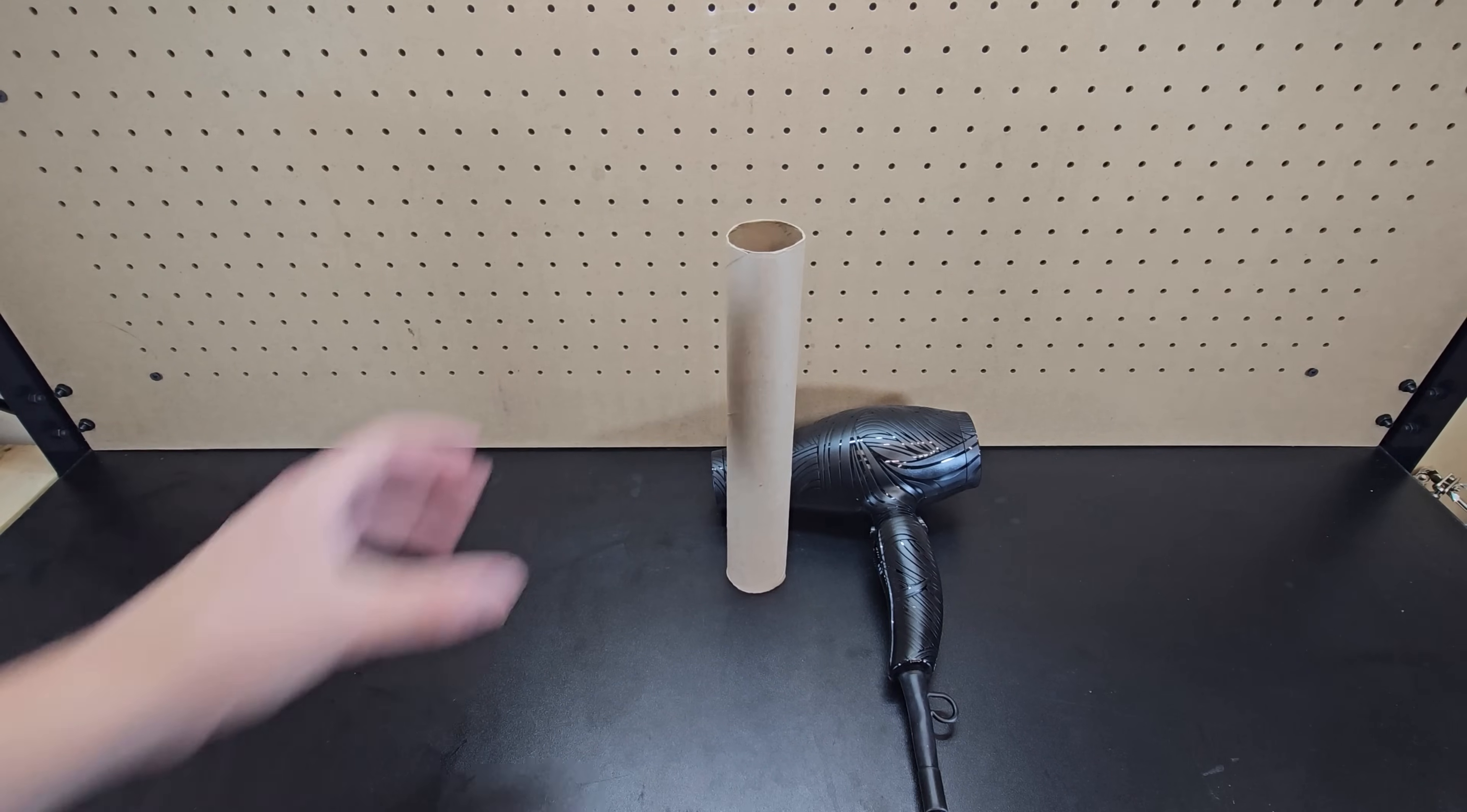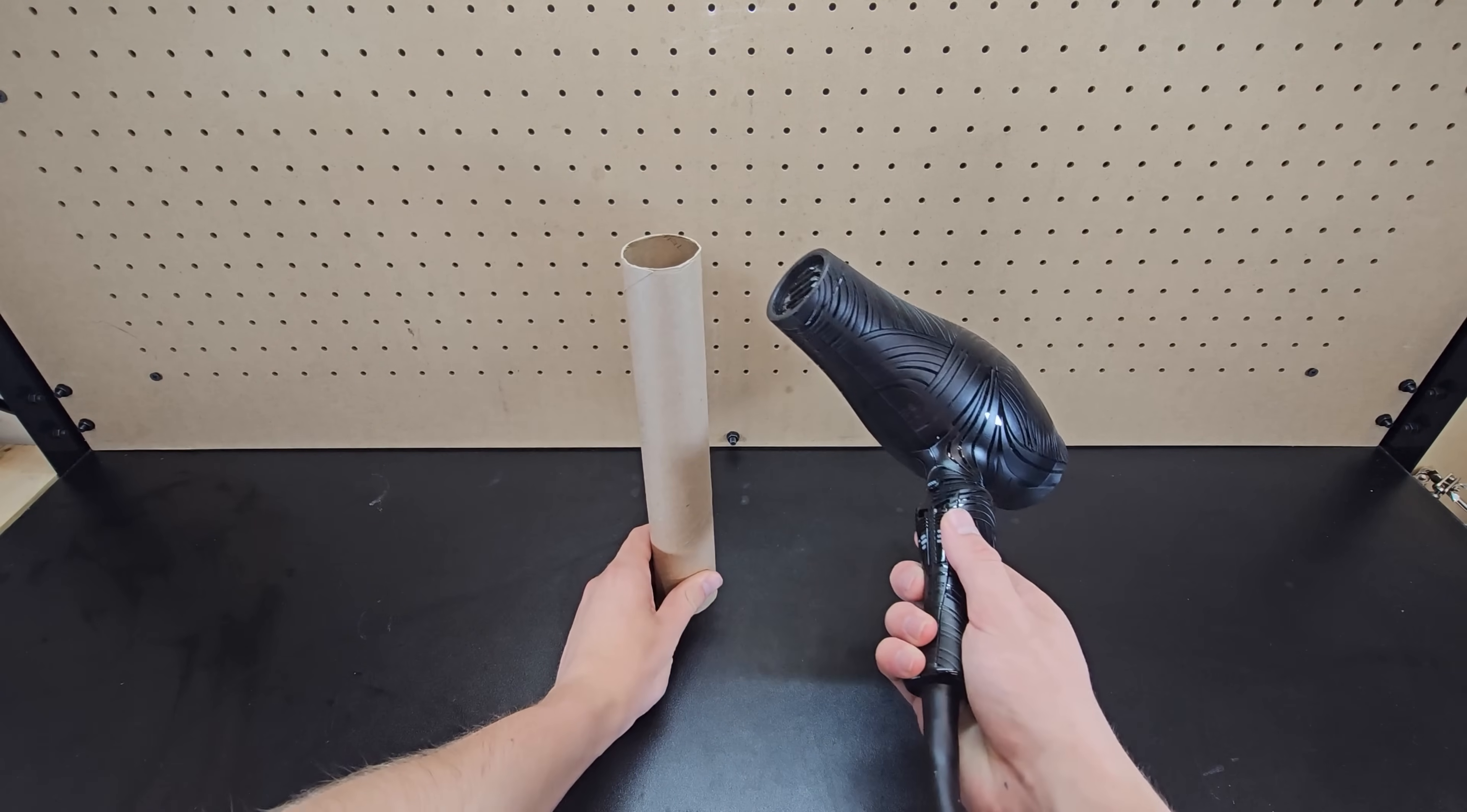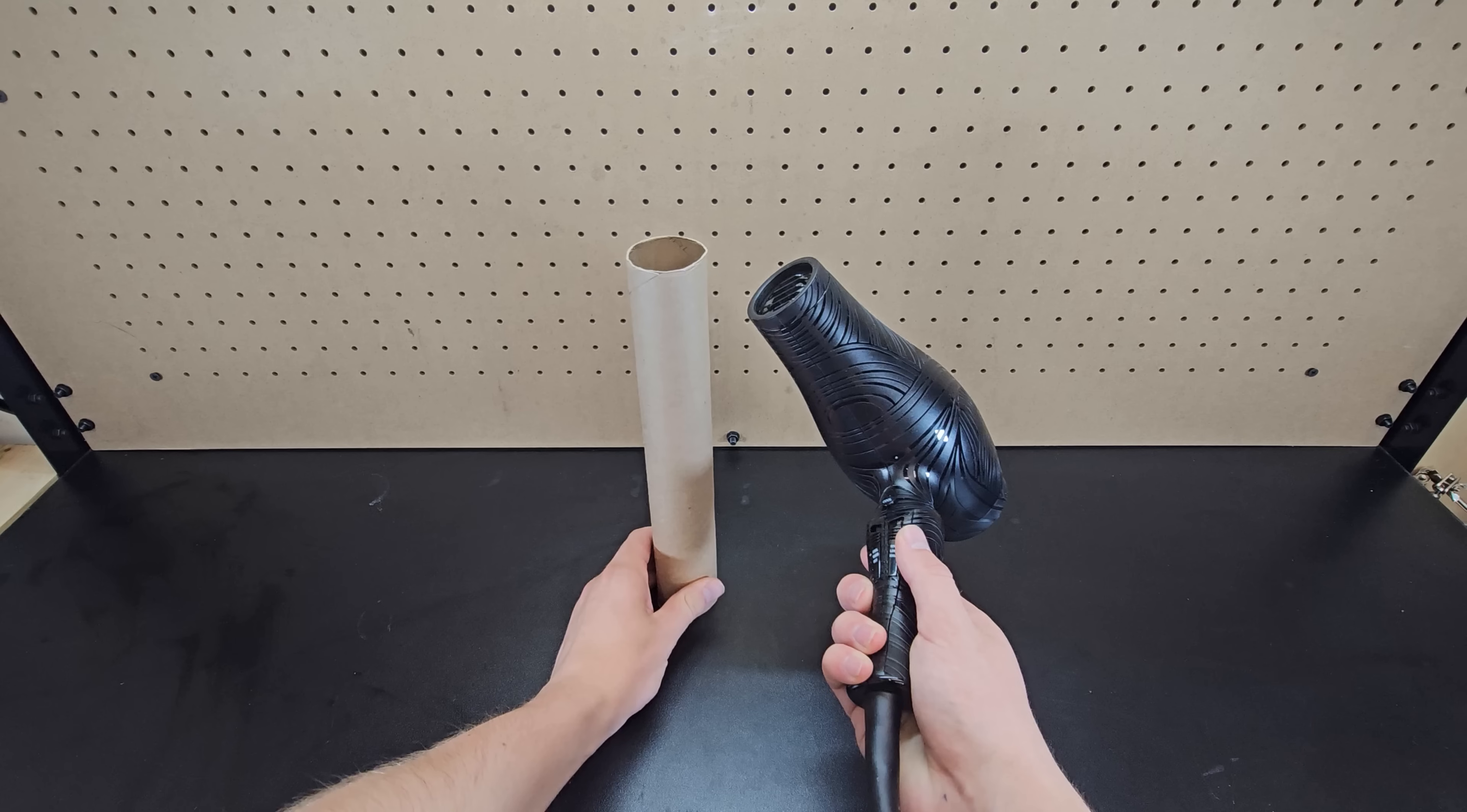If you place a ping pong ball inside a cardboard paper towel roll, leaving a small air gap at the bottom, you can aim a hair dryer up towards the top of the roll like this, and when you turn the hair dryer on, the ping pong ball will fly out.